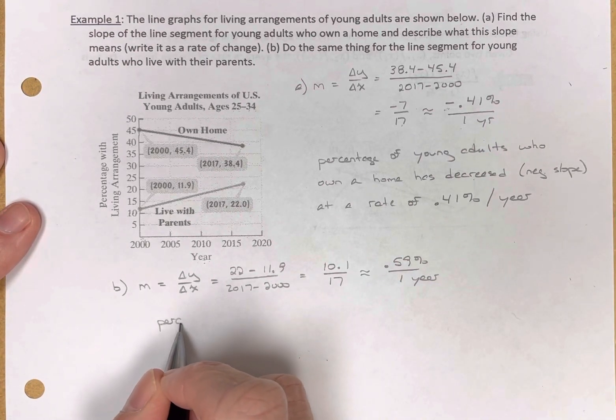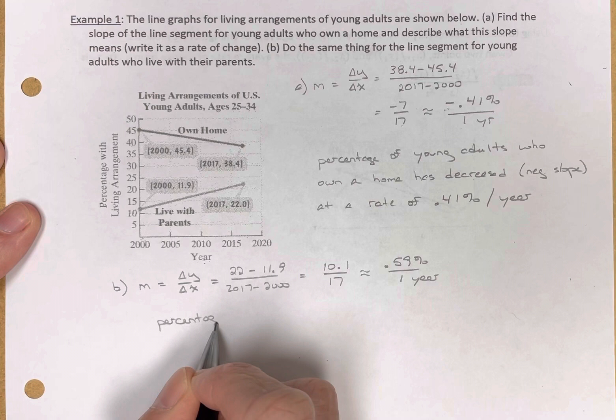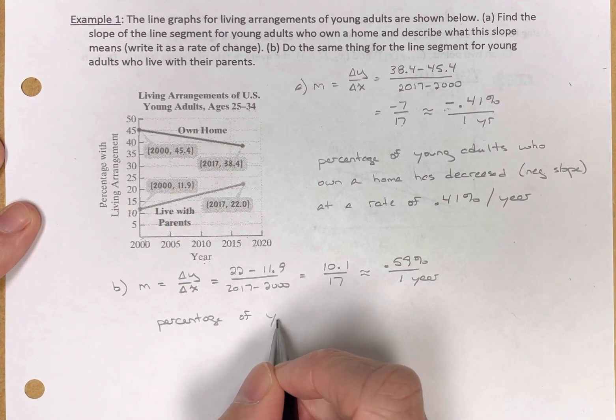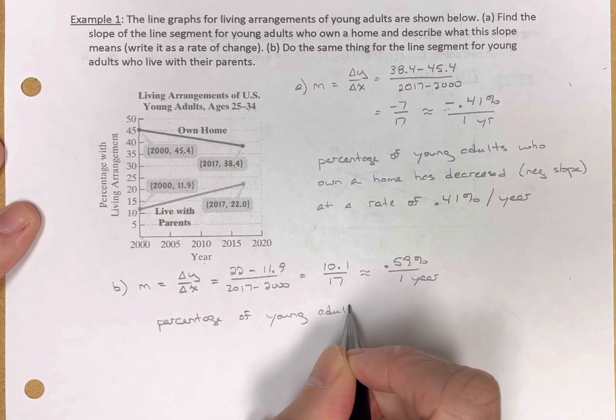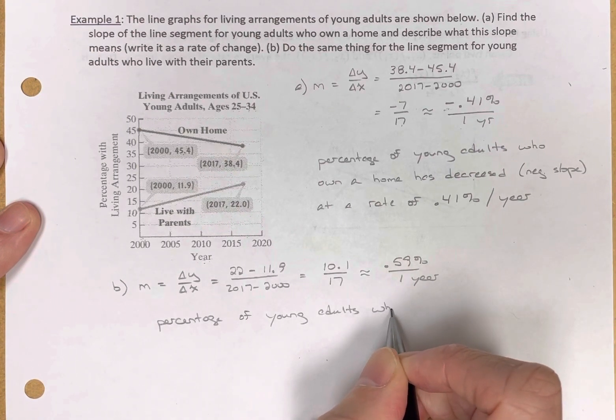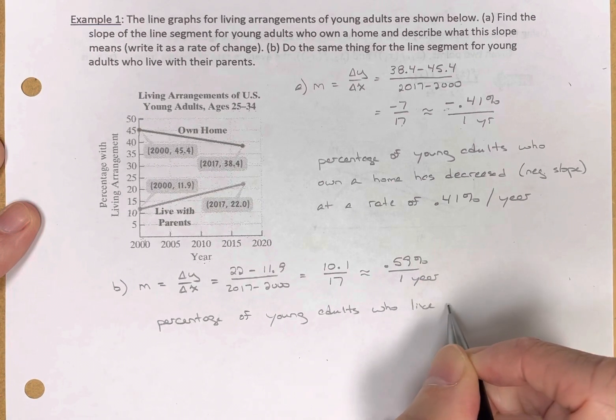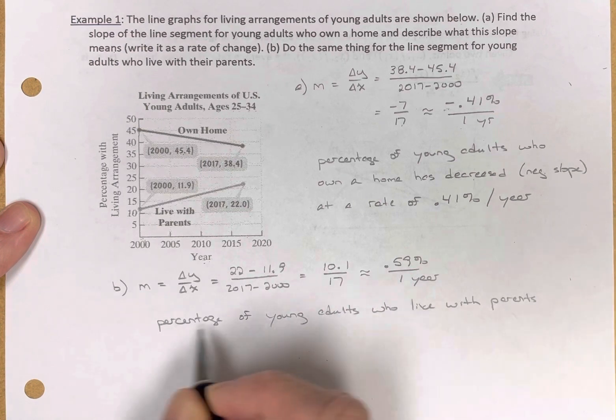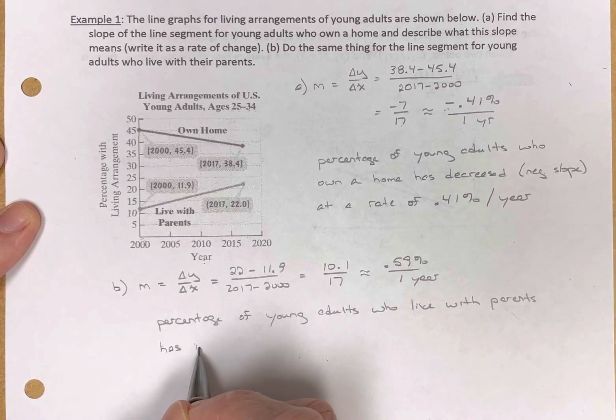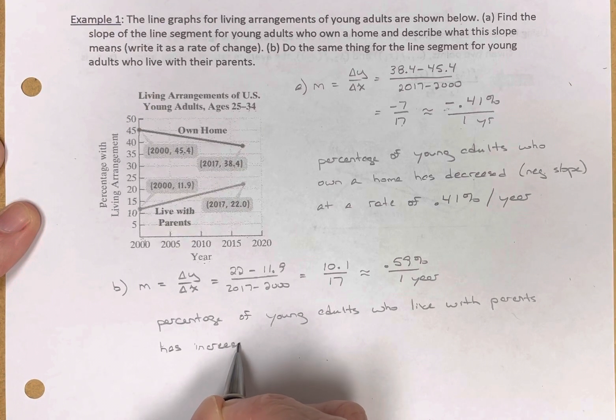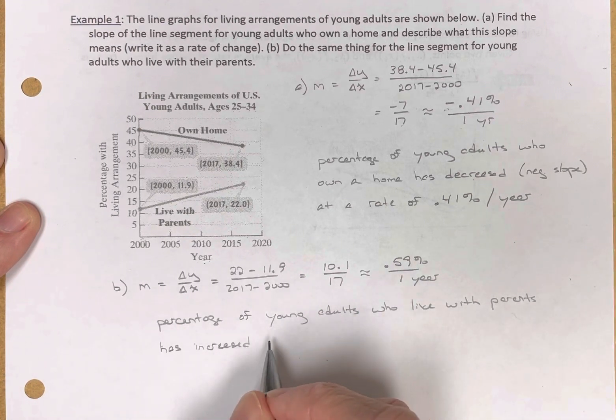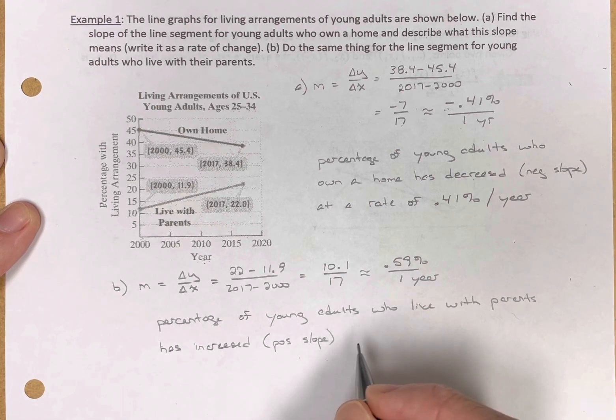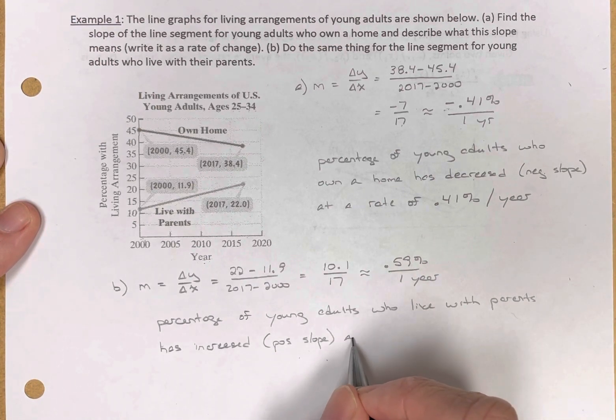The percentage, using my labels, percentage in years - percentage of young adults who live with their parents, live with parents. The slope is positive, so it has increased. So we have a positive slope here, so we're going to use the word increase.